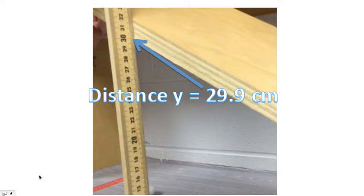Distance y, however, will vary throughout the experiment. Distance y will depend upon the object being used and where we place the object on the piece of wood. For this example, distance y is 29.9 centimeters. Notice where distance y is measured. It's measured below the plank.